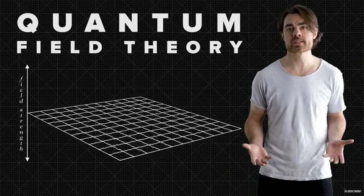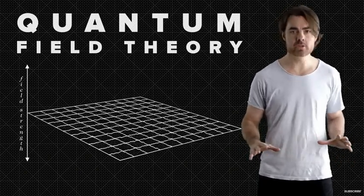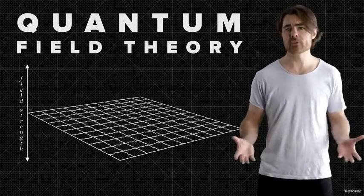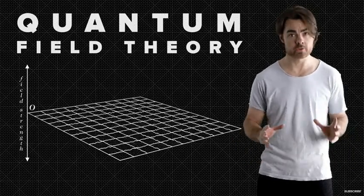For example, the electron is an excitation in the electron field. Imagine that every point in the universe has a certain level of electronness. In empty space, that level hovers around zero. But even in a vacuum, the electron field is there.